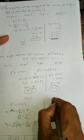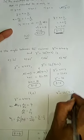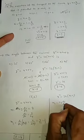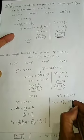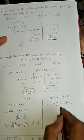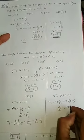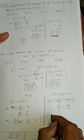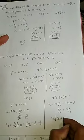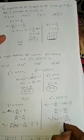For the second curve y² = 36 − x, differentiating: 2y · dy/dx = −1, so dy/dx = −1/(2y). Wait — correcting: 2y · dy/dx = −36... At (8, 6), m2 = −36/(2×6) = −36/12 = −3.